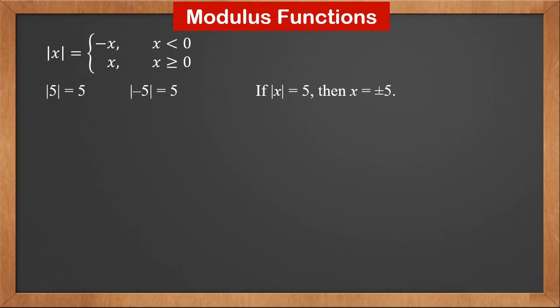If |x| = 5, then x is plus or minus 5. More generally, if |x − a| = b, then x − a is plus or minus b, so x is a plus or minus b.